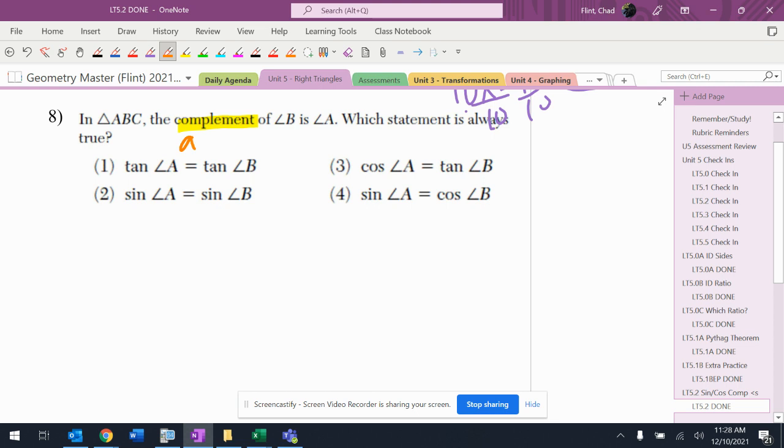Complement means adds to 90. This means that angle A and angle B add to 90.